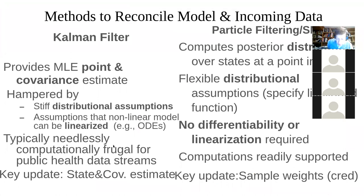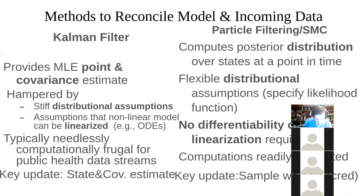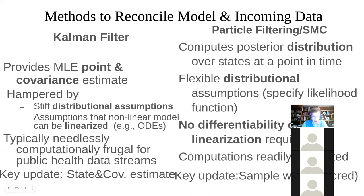Kalman filtering was designed with an eye towards engineering applications — it was in the Apollo computers, in airplanes, in our smartphones to update our location second by second as we navigate to find a Metro stop or a friend's house. It's in rockets. But it's designed for really quick turnaround, estimating the state every few seconds. For most public health streams, we don't have data coming in that quickly — maybe once a day or a couple of times a day. This tends to be computationally frugal to the point of being needlessly so.